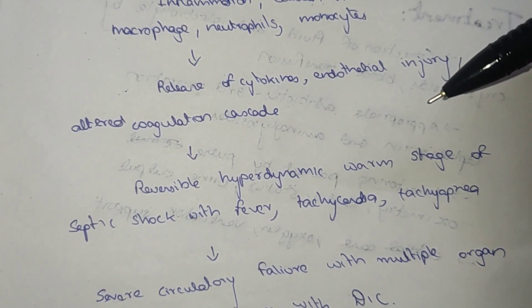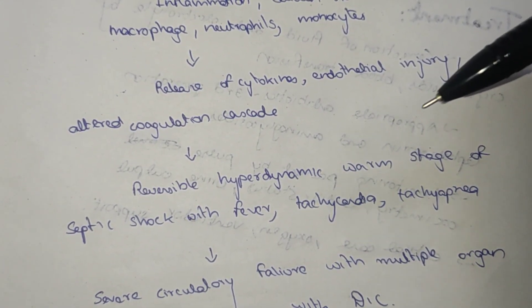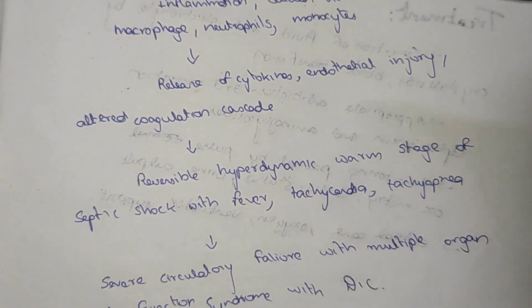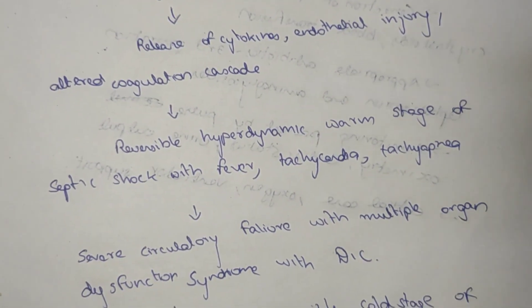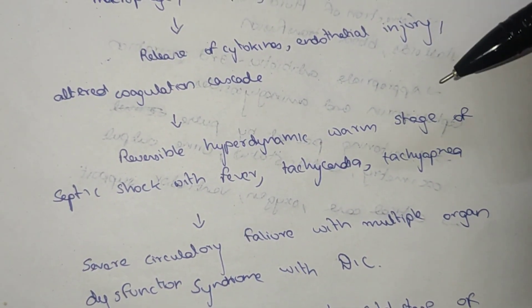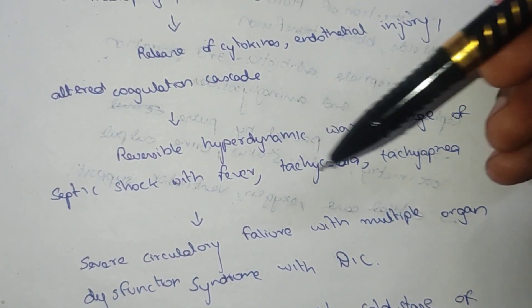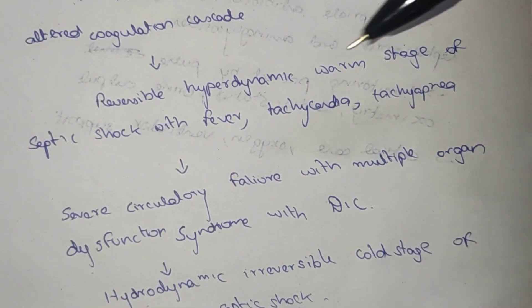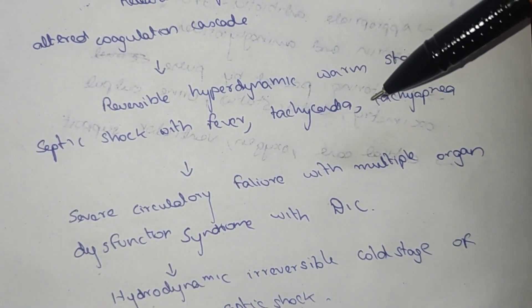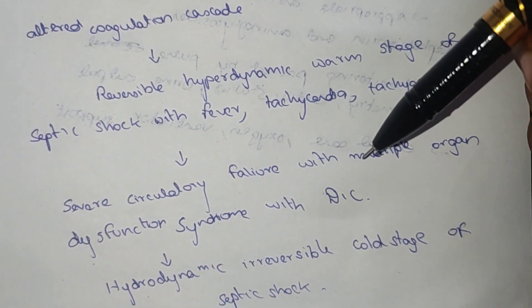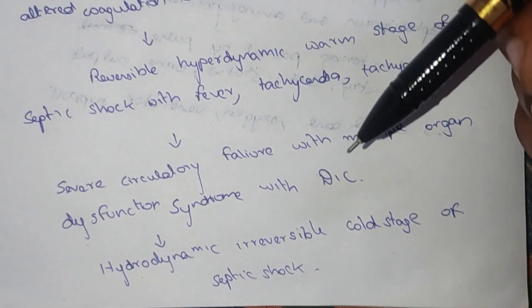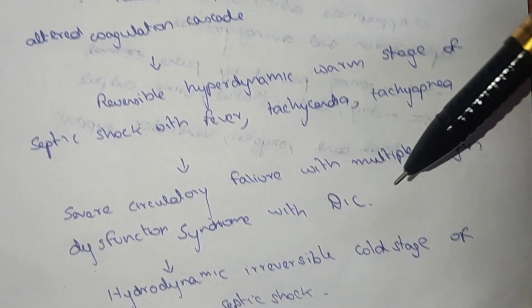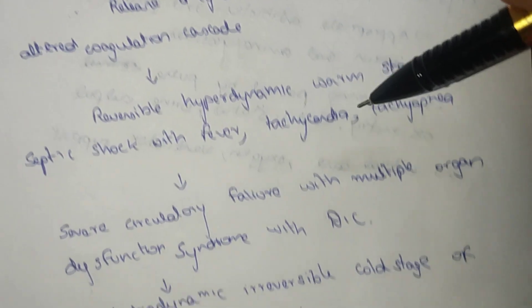The reversible hyperdynamic warm stage of septic shock presents with fever, tachycardia, and tachypnea. Severe circulatory failure with multi-organ dysfunction syndrome and DIC corresponds to the hydrodynamically irreversible cold stage of septic shock. There are two types: warm shock and cold shock.